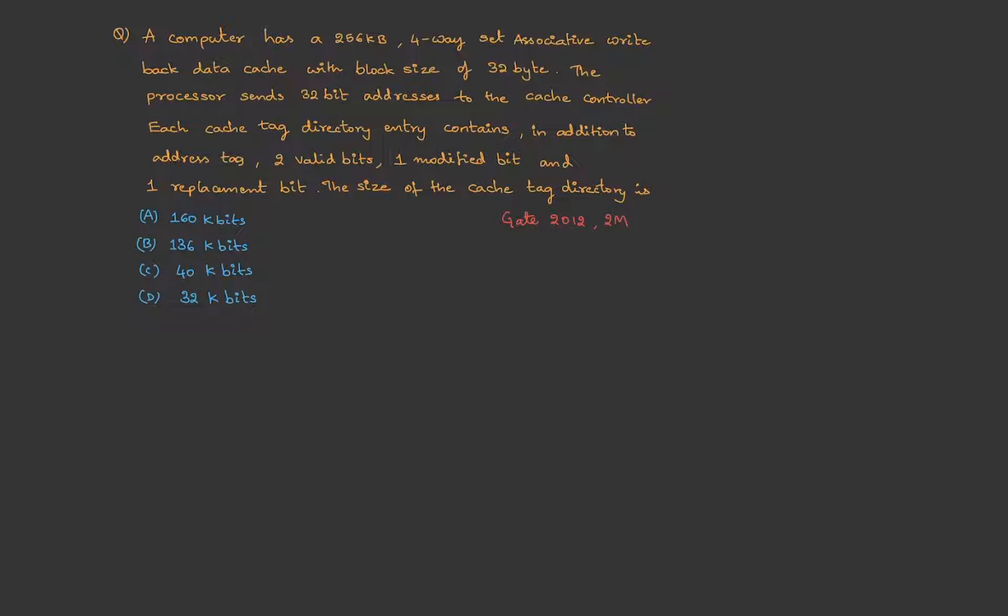Let's write the given data. They have said it is 256 KB cache. So, the cache size is 256 KB. 256 is 2 power 8. K is kilo, 2 power 10. So, this is 2 power 18 bytes.